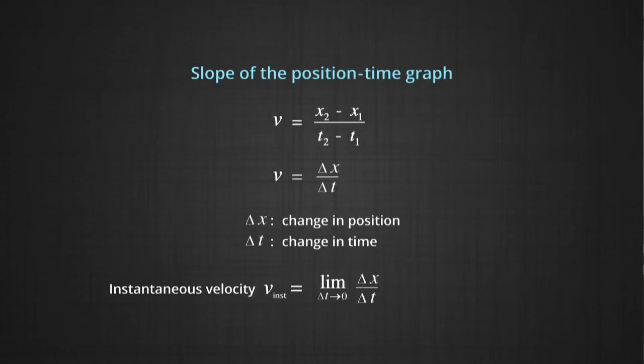The measurement must be done over a certain short time interval. Consider the speed of light: Δx is enormous in one second, so Δx tending toward 0 does not mean velocity is 0. In calculus notation this is written as dx/dt — summing the small displacements of a body over very small time intervals at a particular instant gives you the instantaneous velocity.